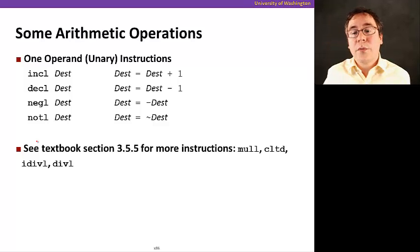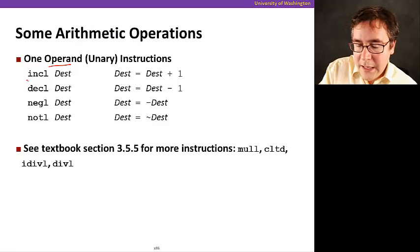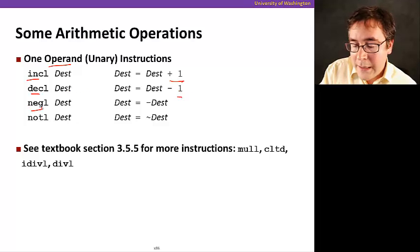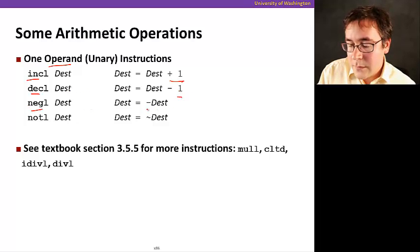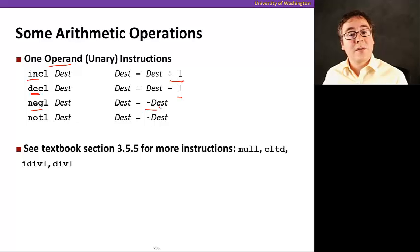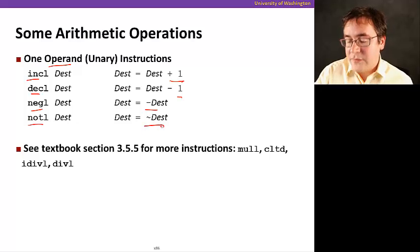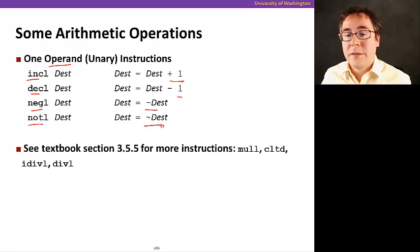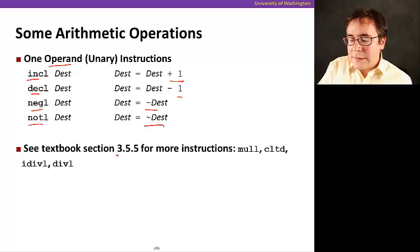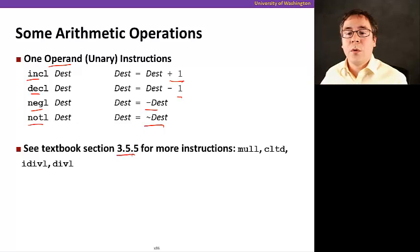Here's some other arithmetic operations. This is unary instructions because it takes a single operand. INC just increments by one. DEC decrements by one. And then, NEG just changes the sign bit, it changes the sign. And NOT just does a bitwise not of the contents of the register. And now you should look at the textbook for more instructions like multiply and so on, division and so on.